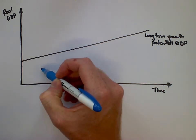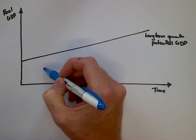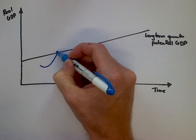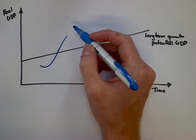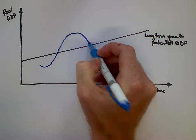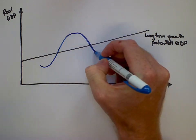But sometimes economies operate at a point that's either below the potential, which is here, or for a short period of time they go above the line, what we talk about as being maybe an unsustainable period of growth that then leads to a bit of a bust.